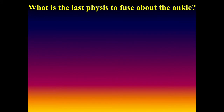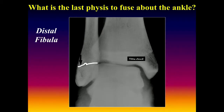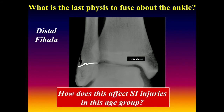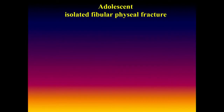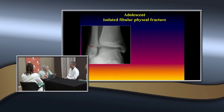Regarding physeal closure about the ankle - the fibula is the last to close. Here you can see the fibula physis is still open while the tibial physis is closed. This affects supination inversion injuries in this age group: you get isolated fibular physeal injuries. Although often dismissed as simple fractures, the tibiotalar joint is very exacting, and any displacement changes the pressure areas, leading to poor outcomes.